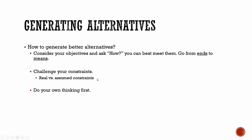The next thing to consider is how to generate better alternatives. One way is to consider your objectives and ask how you can achieve them — go from the ends, which are the objectives, to the means. You might ask yourself, how can you decrease your cost of commuting? From there you start to look at your alternatives and judge which one would best meet that objective.